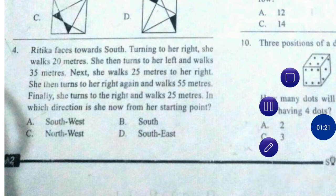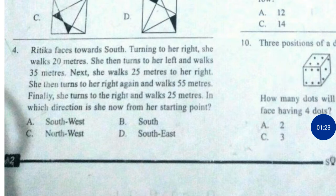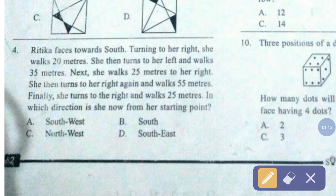Question number 4. Rithika faces towards south. Turning to her right, she walks 20 meters. She then turns to her left and walks 35 meters. Next, she walks 25 meters to her right. She then turns to her right again and walks 55 meters. Finally, she turns to the right and walks 25 meters. In which direction is she now from her starting point? The correct answer is option number C — North West.